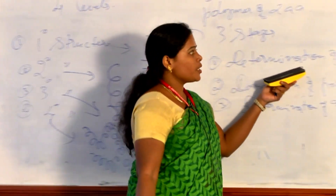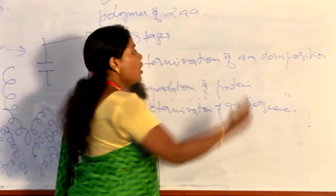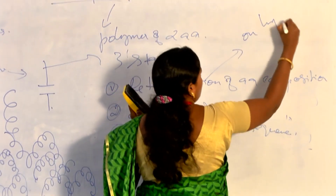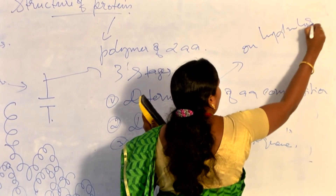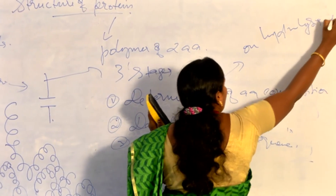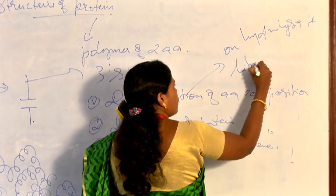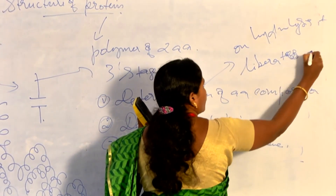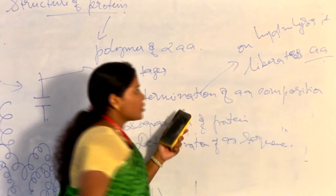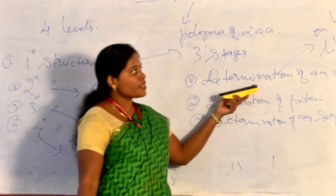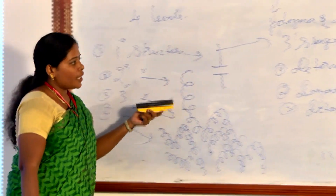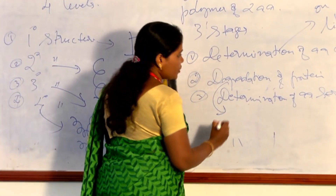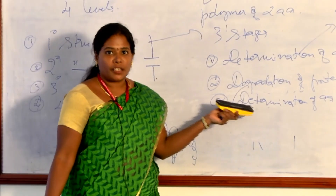In the determination of amino acid composition, the amino acid on hydrolysis liberates individual amino acids. Regarding degradation of proteins, proteins have to be broken down, and we know that proteins are made up of amino acids linked by peptide bonds.